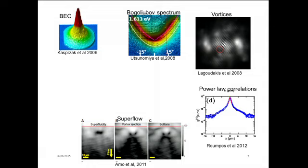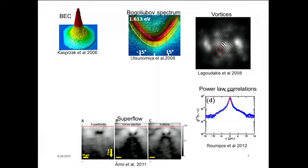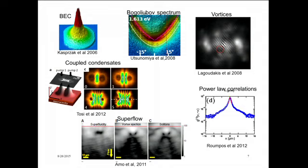You can set up condensates that move. Here's a condensate moving with some object in the way. You can see superflow around the object, then ejecting vortices and solitons. You can do fancier experiments pumping pairs of condensates and having them coupled, looking at the dynamics. There's been quite a lot of work over the last decade.